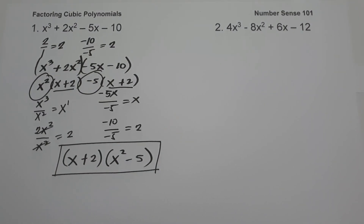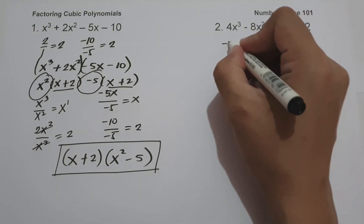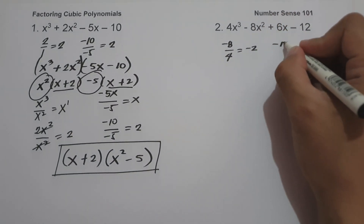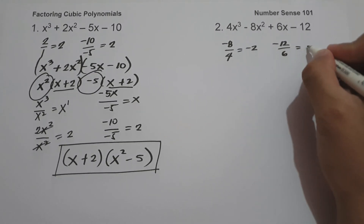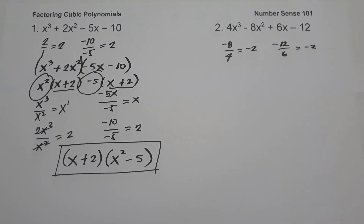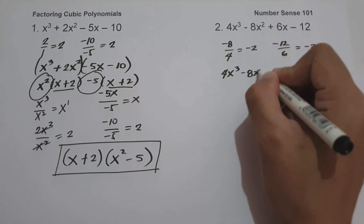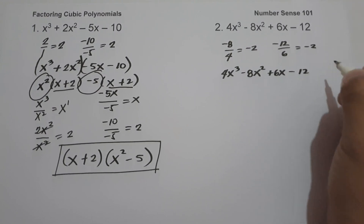On number 2, we have 4x cubed minus 8x squared plus 6x minus 12. Let us check if the first two coefficients have the same ratios with the last two coefficients. Negative 8 divided by 4 is negative 2, and negative 12 divided by 6 is also negative 2. Since we have the same ratios, we can solve this one using factoring by grouping.